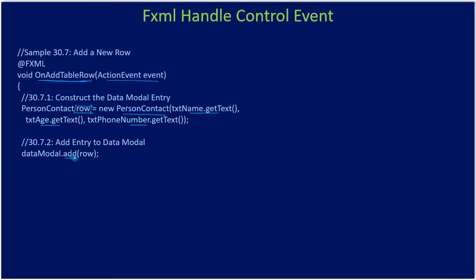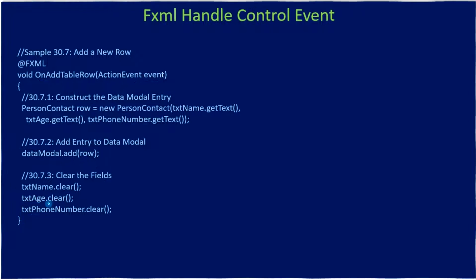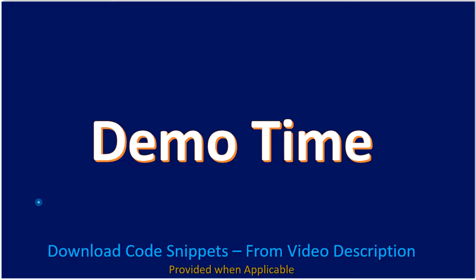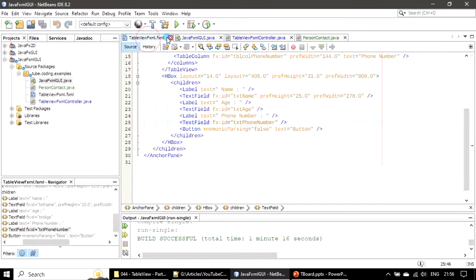The data row is the instance of the PersonContact class. Then to our data model we are making a call to add - this is what we already used in the initialize method. Now we are doing the same thing whenever the user clicks the button. After adding the content to the data row, we are clearing the text fields.